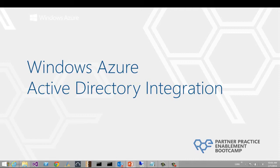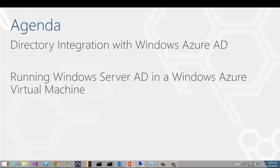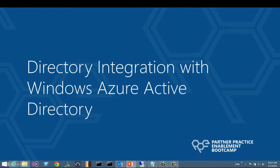Thank you very much for that introduction. In this module, we're going to be covering Windows Azure Active Directory integration. Today, we're going to look primarily at directory integration capabilities of Windows Azure AD. In particular, I'm going to cover scenarios whereby integration with an on-premise AD are supported. And while this will make up the majority of the content for this module, I'm also going to spend some time talking about scenarios for running Windows Server AD in Windows Azure virtual machines, as well as some deployment considerations for doing so. So let's start by talking about how you can integrate an on-premise Active Directory with your Windows Azure Active Directory tenant in Azure.